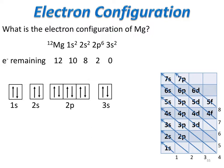Let's do the electron configuration of magnesium. Magnesium is element number 12, so in its neutral state it will have 12 electrons. We're going to put the first two electrons in the 1s, because that's always the first place we put them. As seen in the orbital diagram, we put 1 and 2 in the 1s — in the electron configuration, 1s with a superscript of 2 — leaving 10 electrons to be placed.